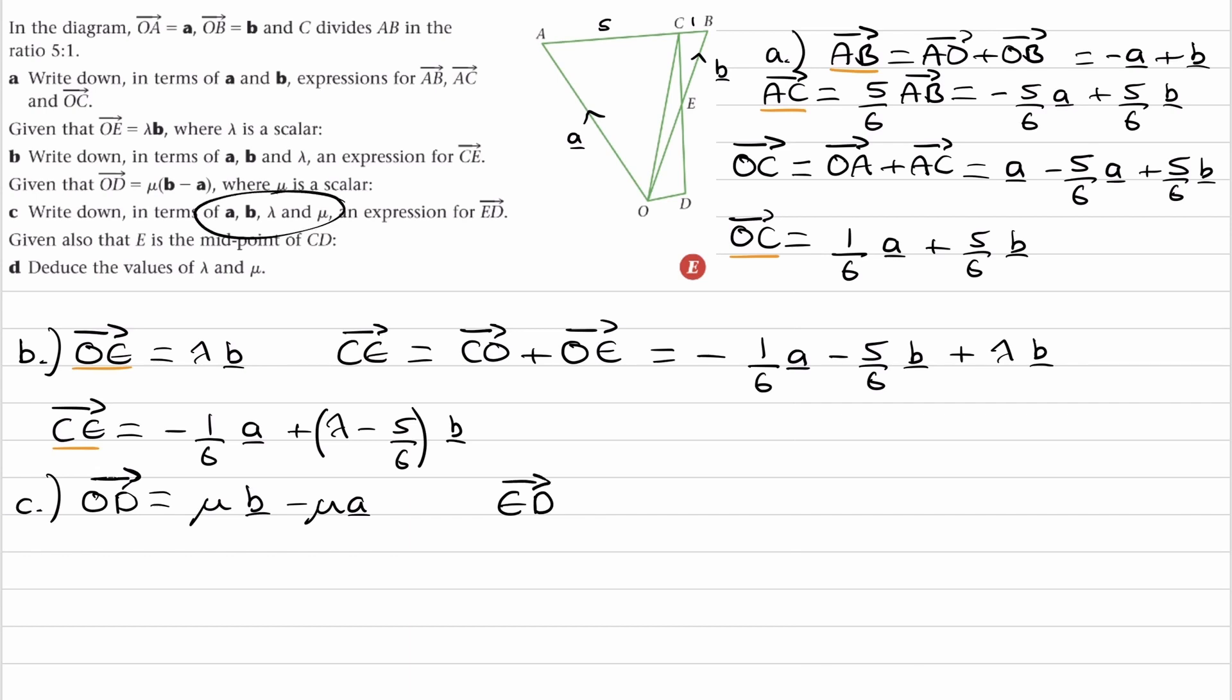So then we want to try and think about what kind of path can we take from E to D that involves all of these things. We're given what OD is. OD is this vector here. So we could go from E down to O and then from O to D.